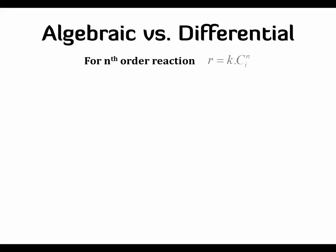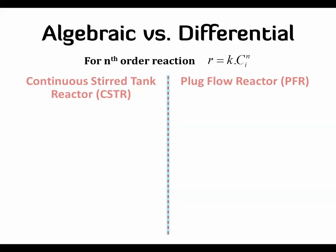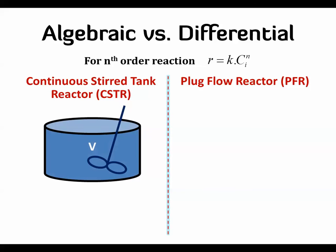To see the difference between algebraic and differential equations, I'd like to use an application from chemical engineering. We can compare them by looking at the continuous stirred tank reactor, known as the CSTR, and the plug flow reactor. These are two famous types of reactors.